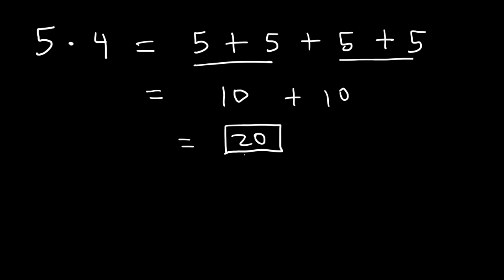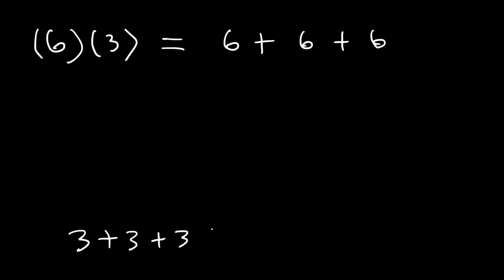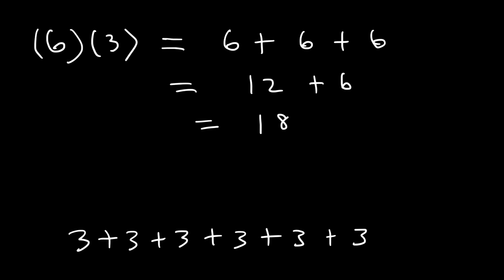Whenever you need to multiply two numbers, just think of adding a number a certain amount of times. For example, if we wish to multiply 6 by 3 — by the way, if you see two numbers in parentheses next to each other, it also represents multiplication — 6 times 3 is equivalent to adding 6 three times. 6 plus 6 is 12, and 12 plus 6 is 18, so 6 times 3 is 18.